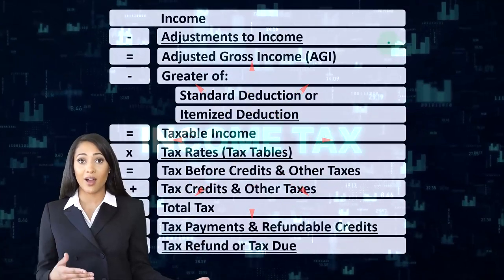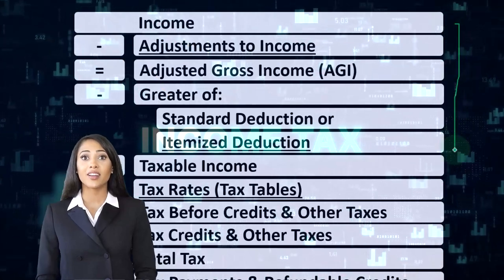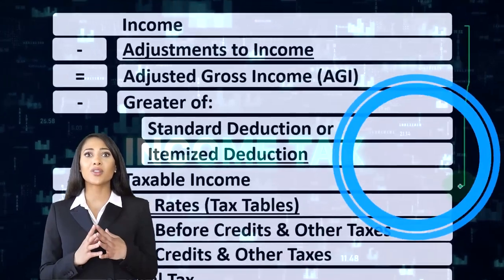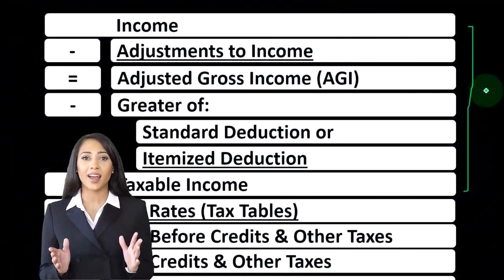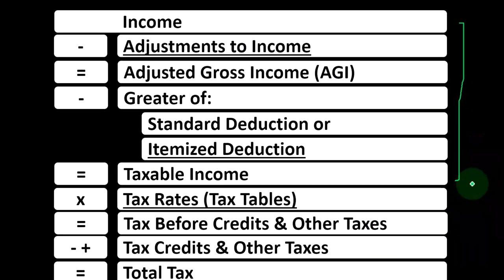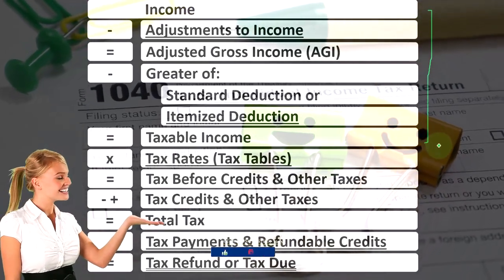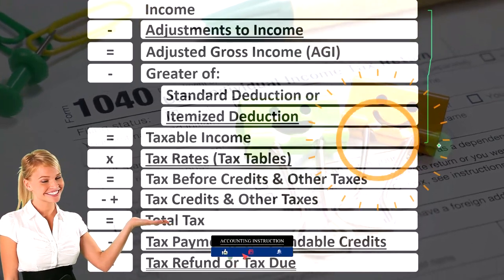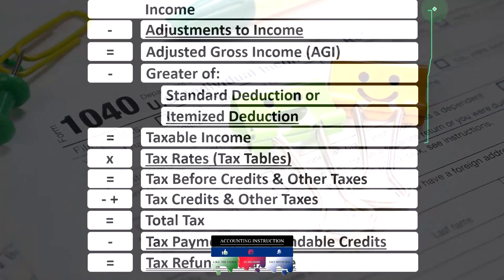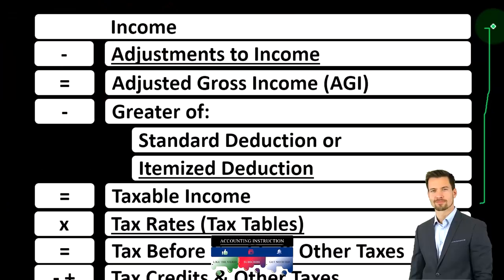Looking at the income tax formula, we're focused in on line one, that being income. The first half of the income tax formula is in essence an income statement, where we have income up top, the equivalent of expenses being the deductions, getting us down to taxable income — the equivalent of net income. Our goal, because it's taxes, is to have taxable income as low as possible. So when looking at line one, we want to determine: is something income, and if it is, do we have to include it as taxable income?